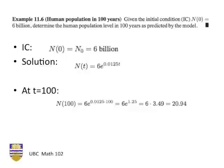In one example, we're told that the initial population is 6 billion, and we're asked what it will be in 100 years' time. We can solve this by plugging in t equals 100 into the exponential solution, and when we work this out, it turns out that we get roughly 20.9 billion.